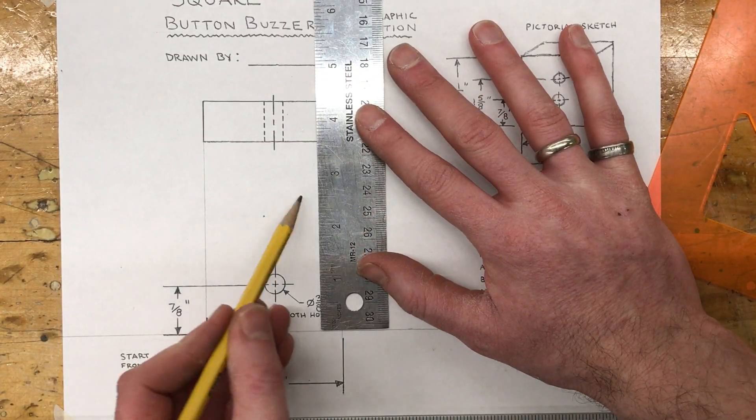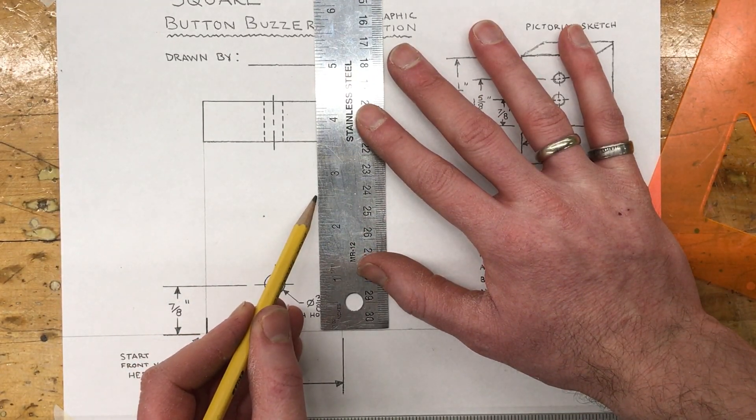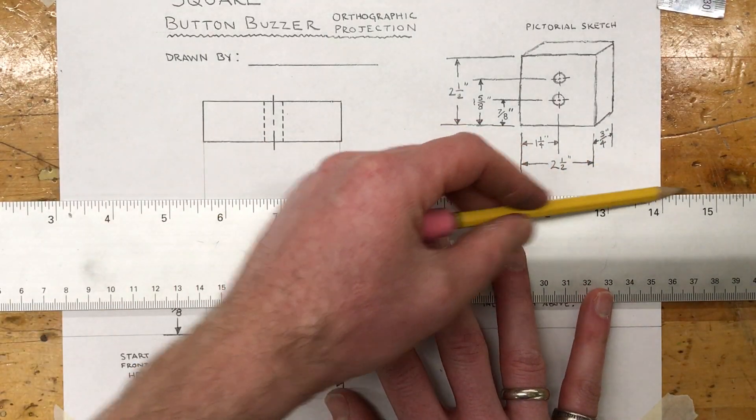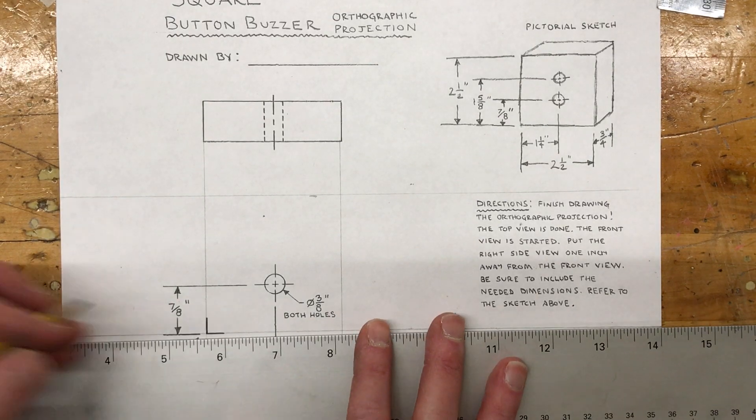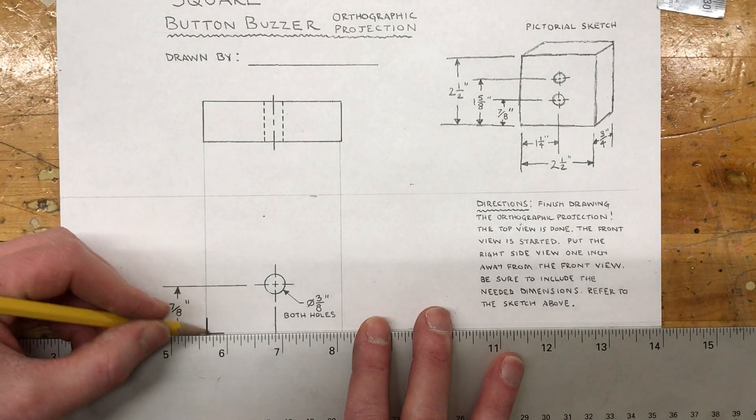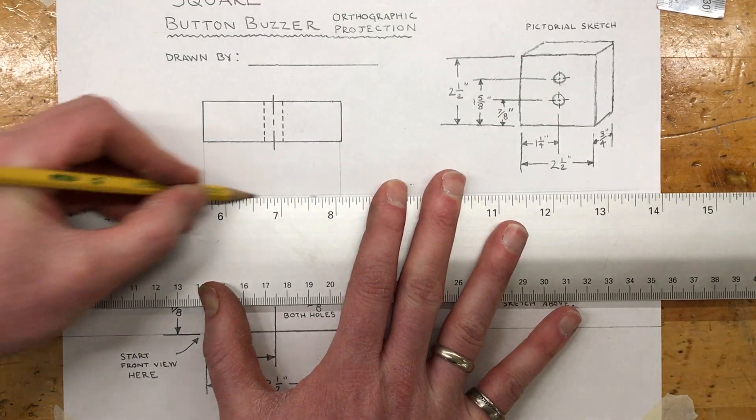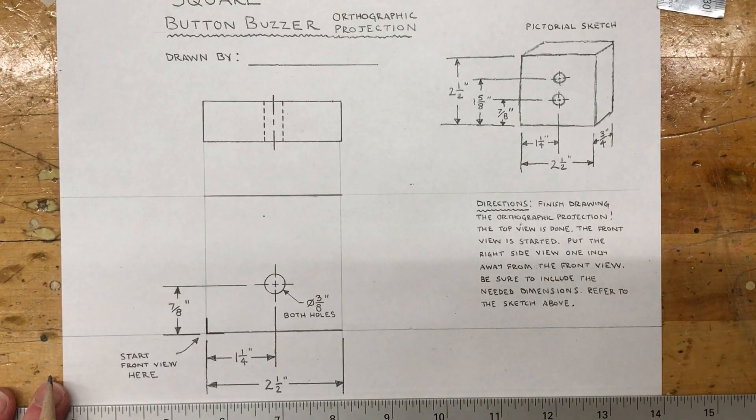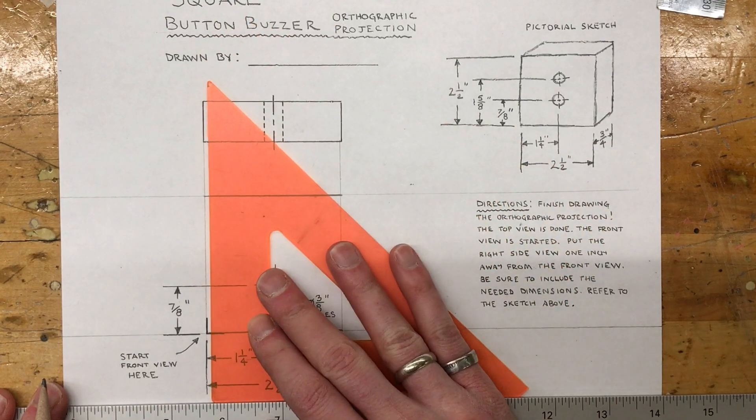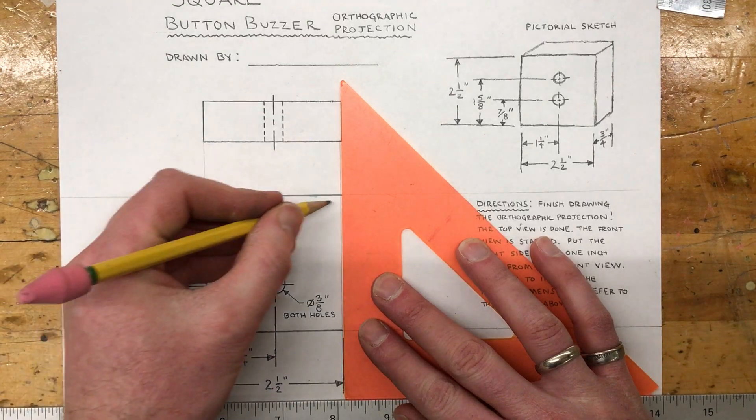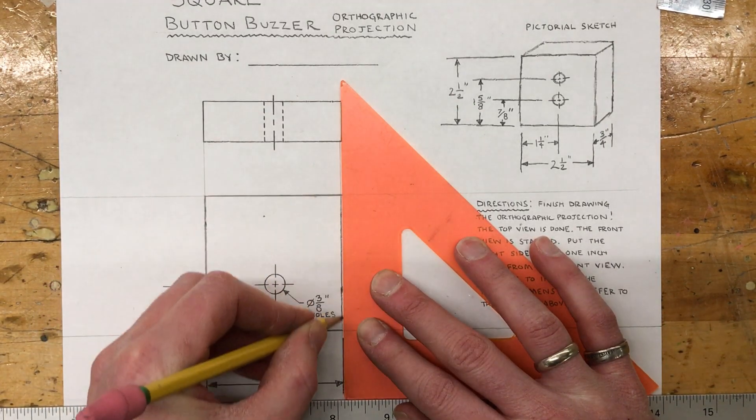Put a mark perpendicular to the ruler and then make a light line all the way across. And then I can darken in this rectangle. So there is the perimeter of the front view.